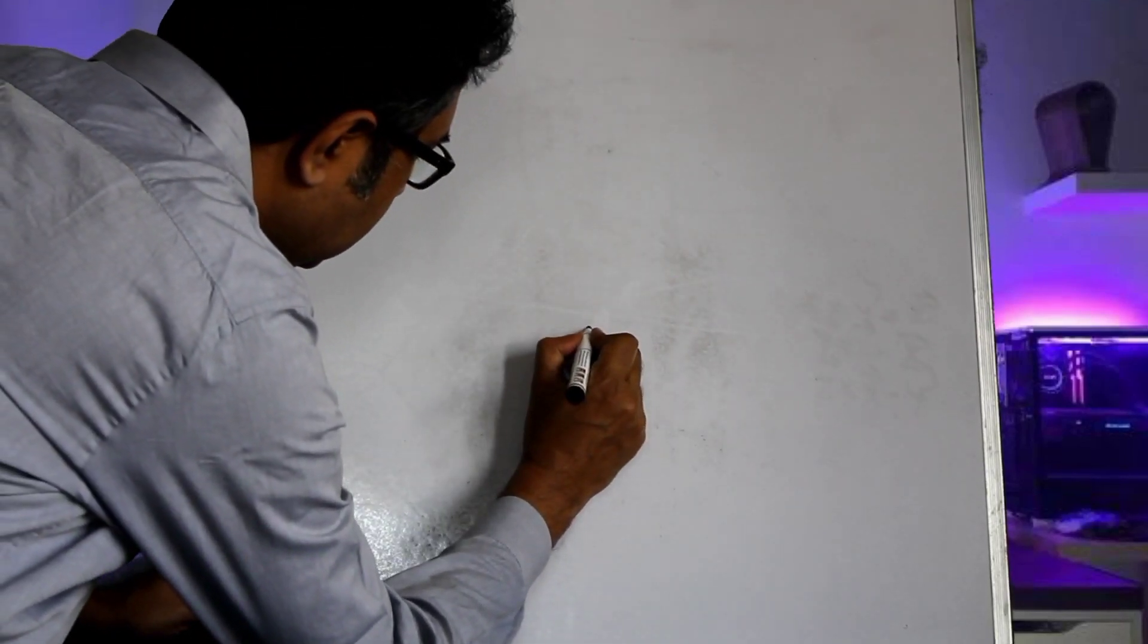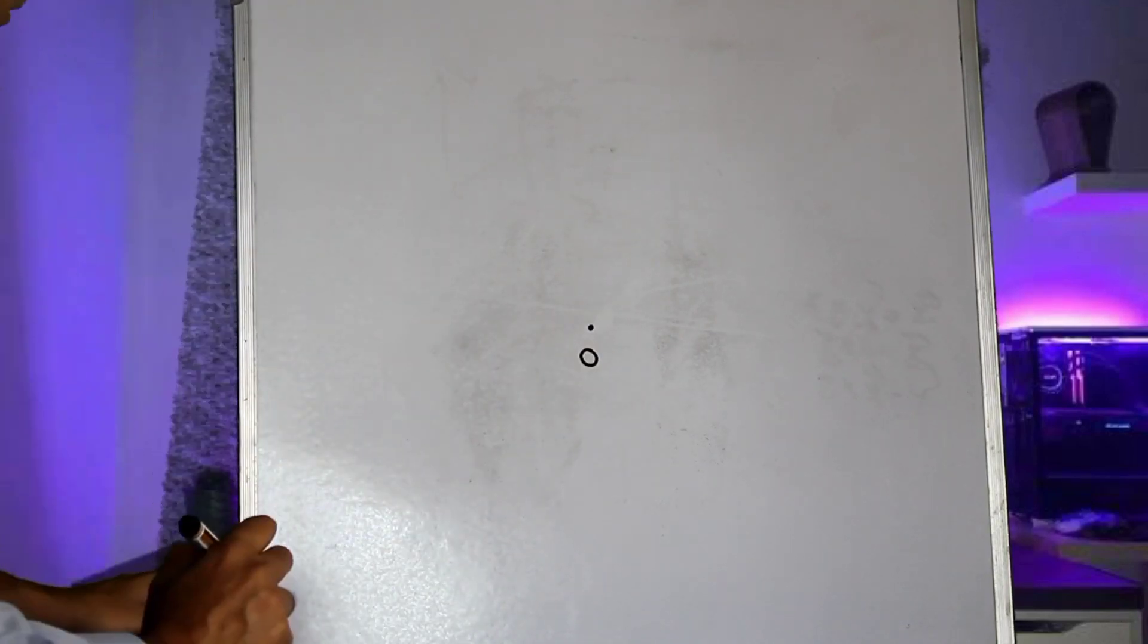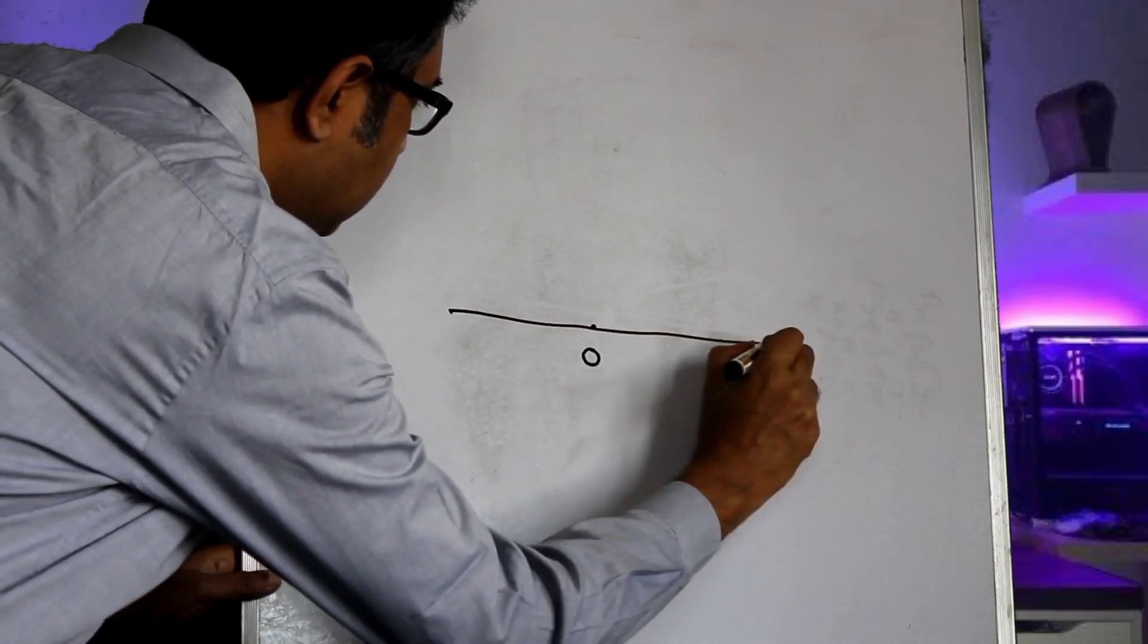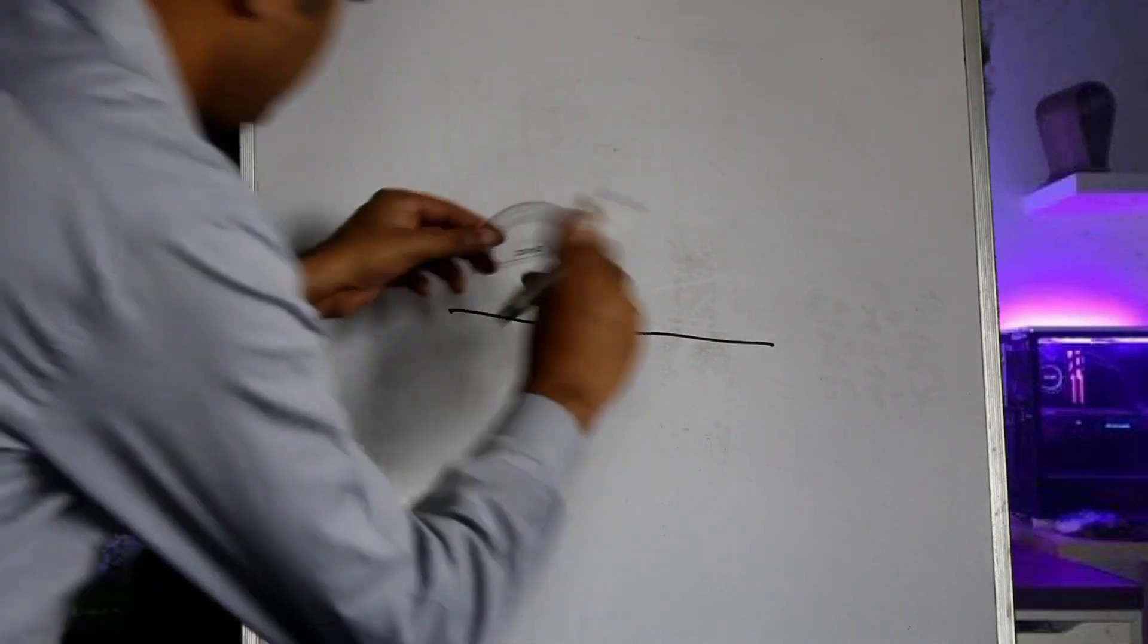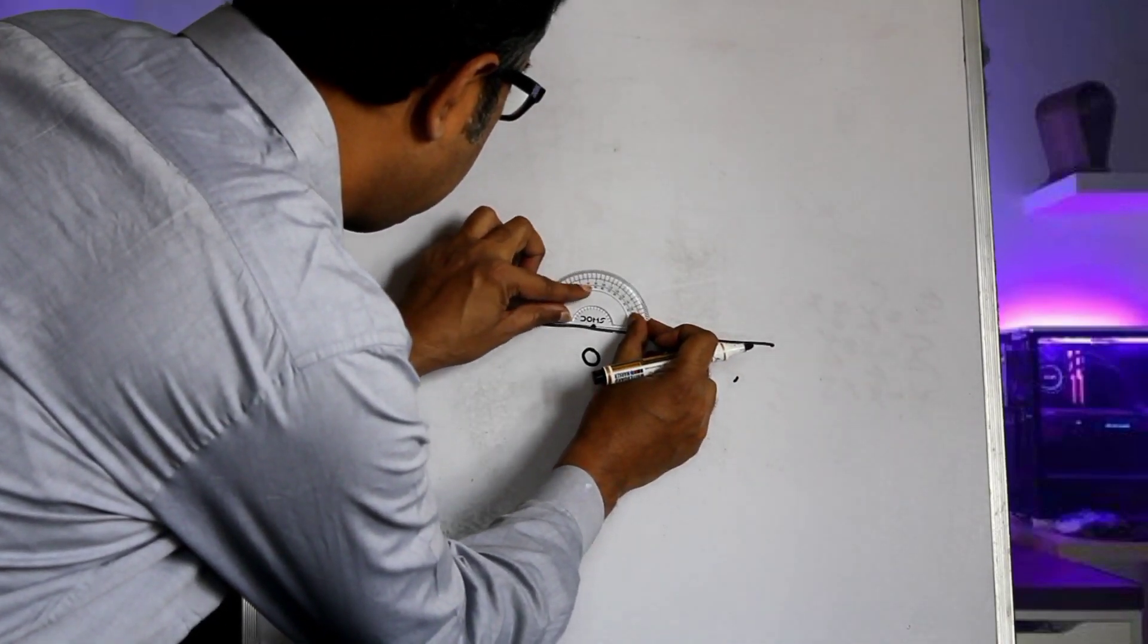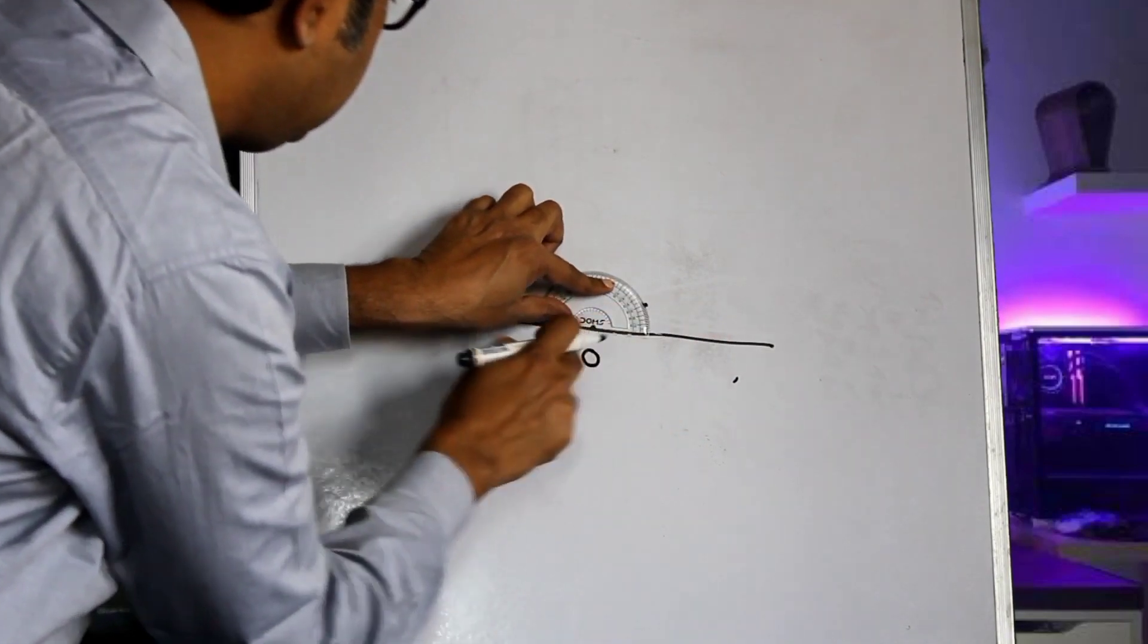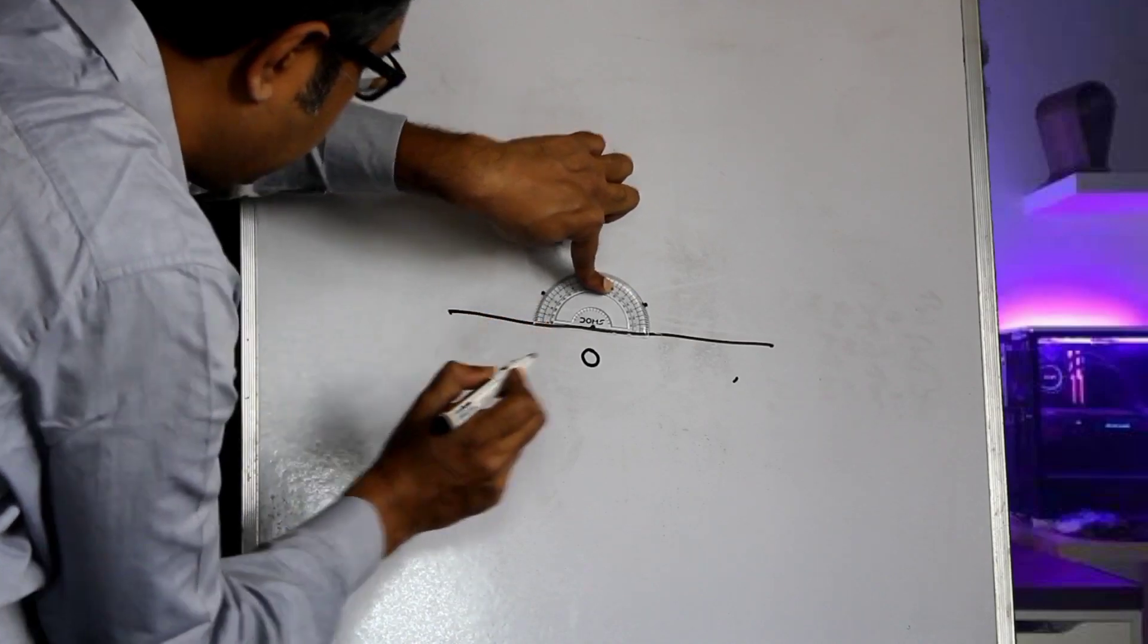Let us define this point which would be the origin O. Now let us draw a line horizontally to this. Now if we take a 30-degree angle in this direction and a 30-degree angle in this direction.